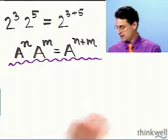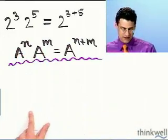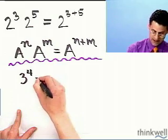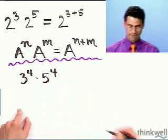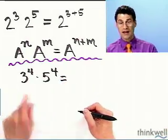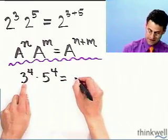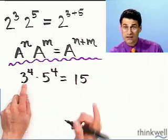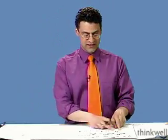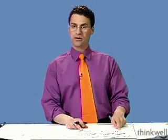Now, what about when you have different bases — when you don't have a and a together? For instance, suppose I have 3 to the 4th multiplied by 5 to the 4th. What would be a great wrong answer here? Well, a great wrong answer would be to say: multiply the bases together to get 15, add the exponents — trying not to break cardinal rule number 6 — and get 15 to the 8th. That is a great wrong answer. Why is it wrong? Again, when in doubt, write it out.